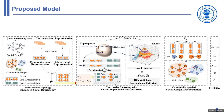Specifically, we design noise perturbations with Gumbel distribution to generate symmetrically consistent and variable augmented representations. We then learn Kernel Dependence Maximization of the augmented representations by adding HSIC to the Graph Contrastive Learning framework.